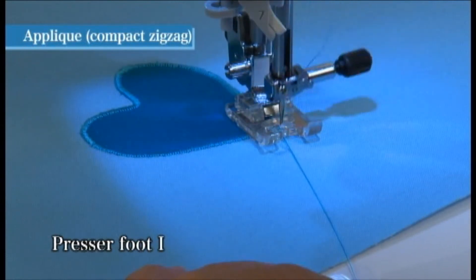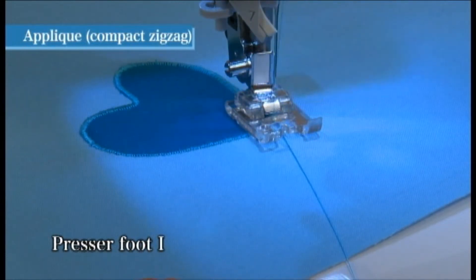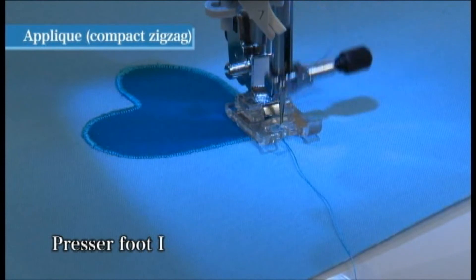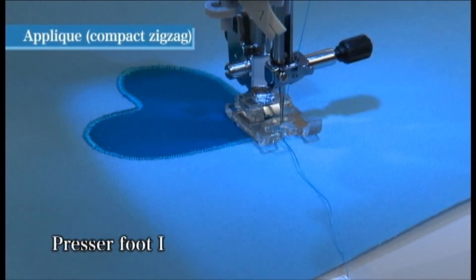When you have finished sewing the applique, press the reverse stitch button to sew three to five reverse stitches to lock the seam.